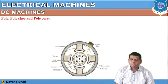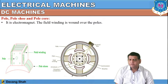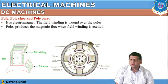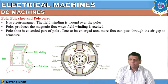The next parts are the pole, pole shoe, and pole core. This portion is defined as the pole, this is the pole shoe, and the overall portion is the pole core. It is an electromagnet. The field winding is bound over the poles, and the poles produce magnetic flux when the field winding is excited. The pole shoe is the extended part of the pole — due to the enlarged area, more flux can pass through the air gap to the armature. It is made up of cast iron and silicon steel.